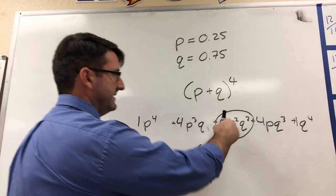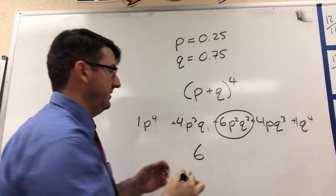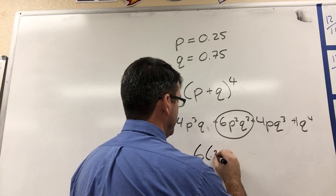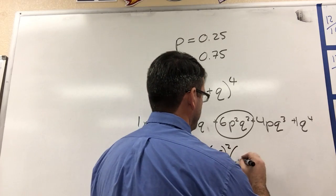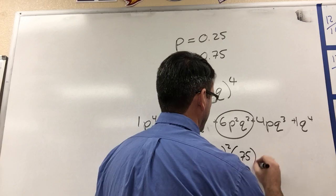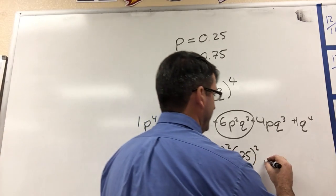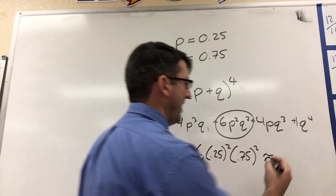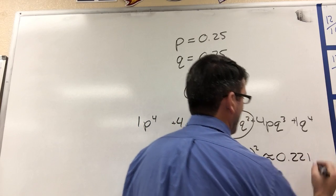So let's take that 6P squared Q squared and plug in our values for P and Q. So 6 times 0.25 squared times 0.75 squared. And if we plug that into the calculator, we're going to get a value that's approximately equal to 0.221.